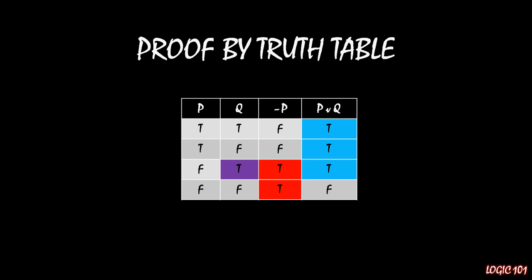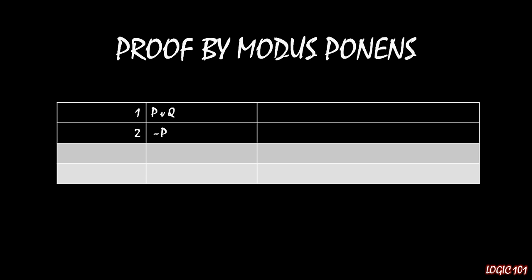We can also prove this using modus ponens, just as we used modus ponens to prove modus tollens. Looking at this as a mini-proof: disjunctive syllogism gives us two premises, P or Q and not P. Recall from our replacement rules that we can rewrite disjunctions as implications using material implication — P or Q becomes not P implies Q. Now line two tells us not P is true, which is the antecedent of that implication. Applying modus ponens, we conclude Q must be true — exactly what disjunctive syllogism gives us.